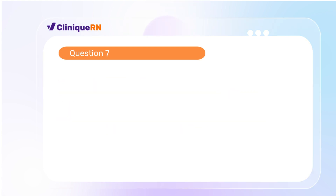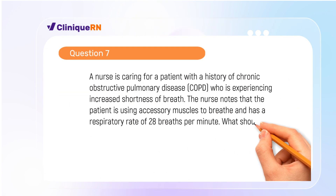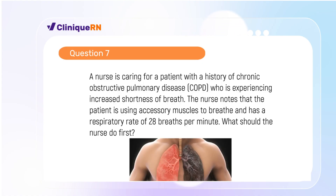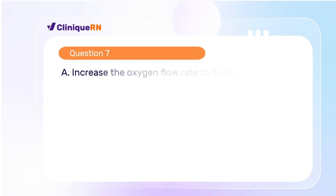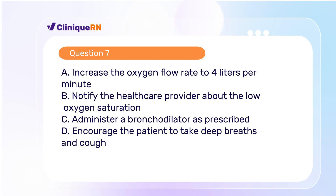Question 7. A nurse is caring for a patient with a history of chronic obstructive pulmonary disease (COPD) who is experiencing increased shortness of breath. The nurse notes that the patient is using accessory muscles to breathe and has a respiratory rate of 28 breaths per minute. What should the nurse do first? A. Administer the prescribed bronchodilator. B. Increase the oxygen flow rate. C. Monitor the patient's blood pressure and heart rate. D. Notify the healthcare provider immediately.